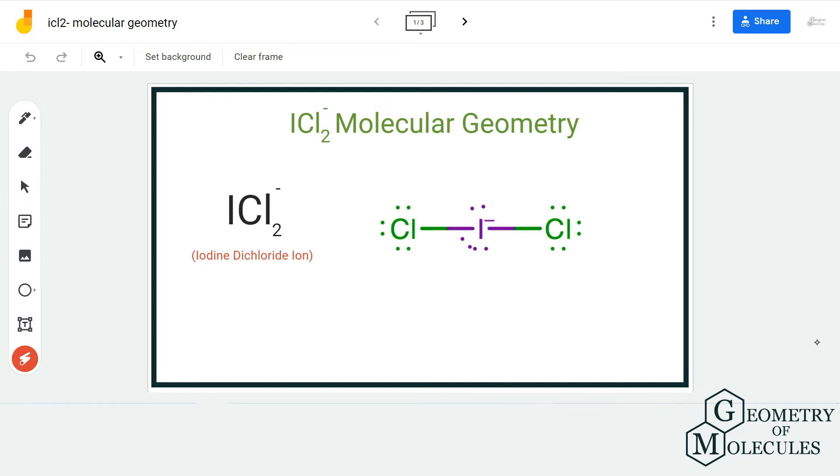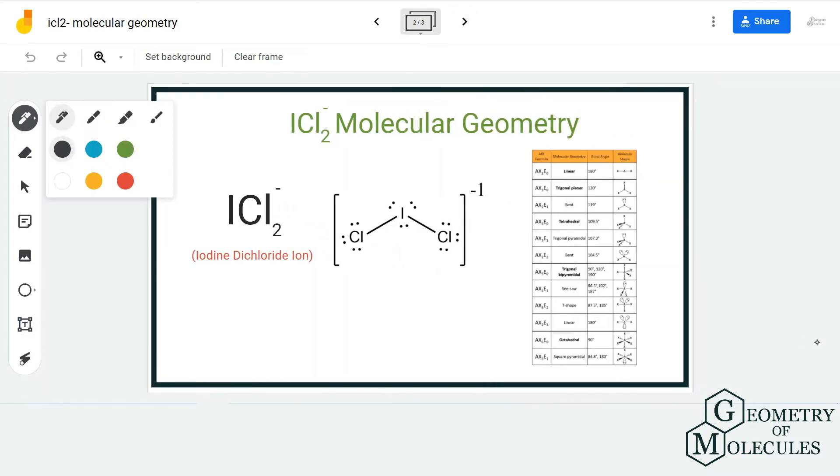Now the AXE notation for this molecule will be AX2, as there are two chlorine atoms forming bonds with iodine atom. And N will be 3 because there are three lone pairs of electrons on this iodine atom. Either it is AXN or AXE, whatever is fine. AX2E3 would be the notation for this molecule.